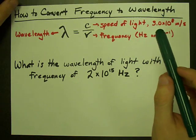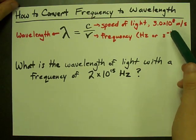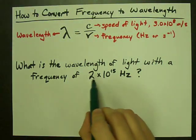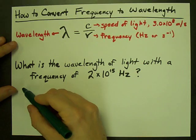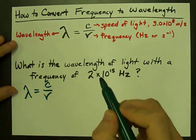Now your frequency should be given in Hertz, or per seconds (seconds to the minus 1) for this to work out best. In this case, I'm given my frequency in Hertz. My wavelength is the speed of light divided by the frequency.